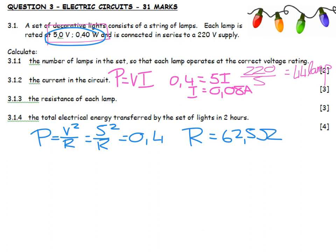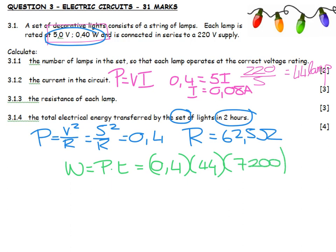The total electricity transferred by the set of lights in two hours: energy transferred is work done. Work done is power times time. The entire set, each one is going to transfer 0.4, but there are 44 of these lamps, for a period of 2 hours which is 7,200 seconds. I land up with 126,720 joules.